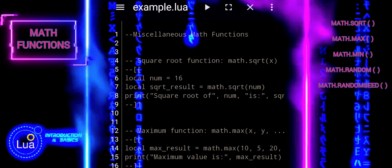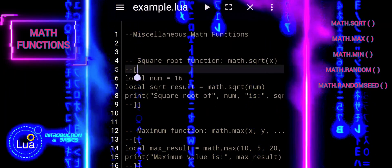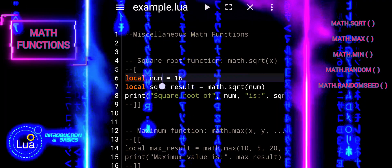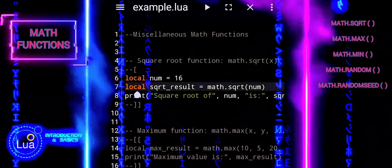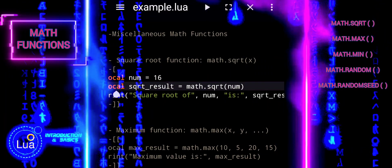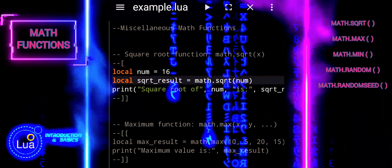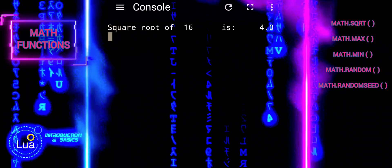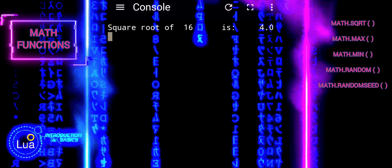In this example, math.sqrt function calculates the square root of number, which is 16. The result is 4. The math.sqrt function is commonly used in mathematical calculations, physics simulations, and any application that requires square root calculations.